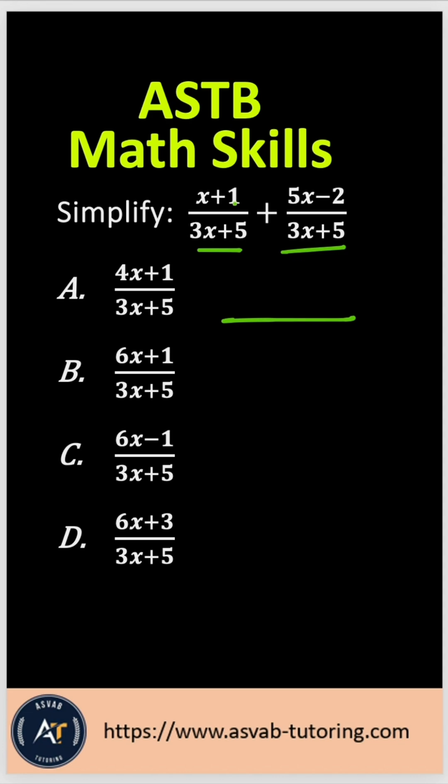You just need to add the numerator. So let me write that down here so that the denominator is 3x plus 5. The numerator you have x plus 1 plus 5x minus 2, right?